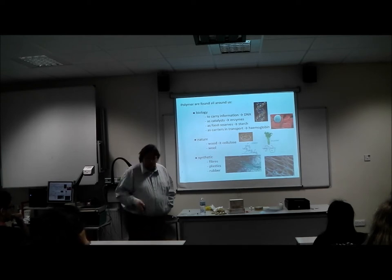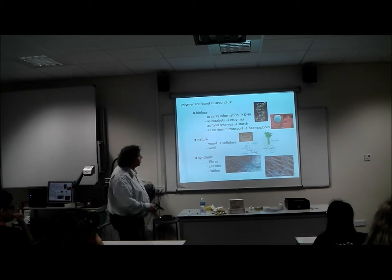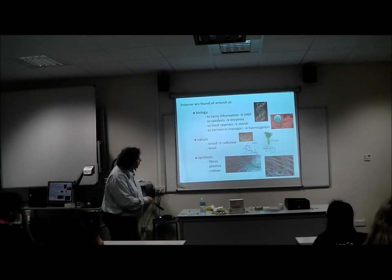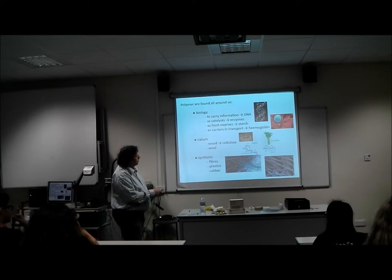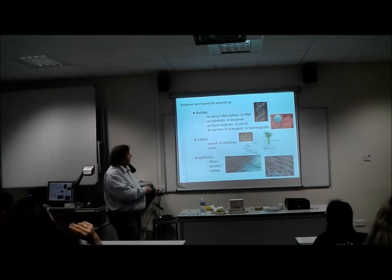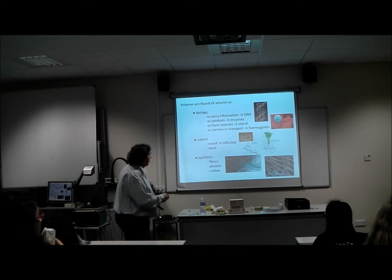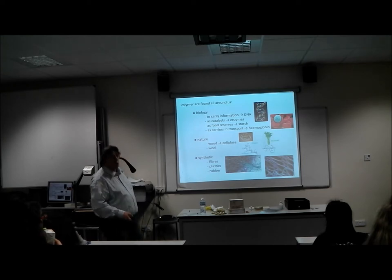The way to do this is you take a number of monomers, polymerize them into a chain, and you'll have PVC, which is a polymer. You can find polymers all around you. They're used in biology to carry information in the double helix of DNA, as catalysts and enzymes, food reserves — starch is a polymer — or as carriers in energy transport, which is hemoglobin. You find polymers in nature: wood is a good example, these are cellulose molecules, very similar to sugar.